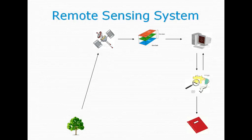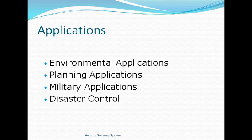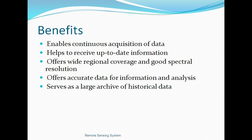Going back to our sketch, the data will be processed through a computer and an output will be created to interpret those data. Usually it is a map, and that map will be used for decision making. The applications are various but usually they are for environmental applications, planning applications, military applications, and disaster control.